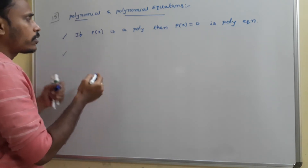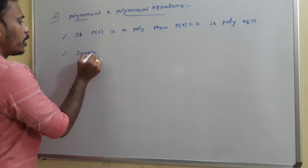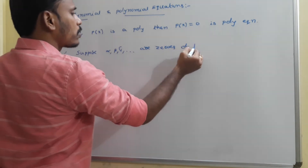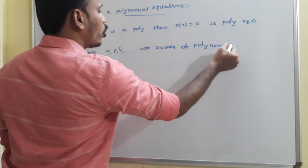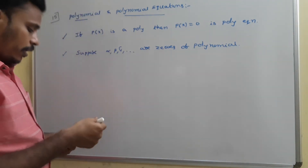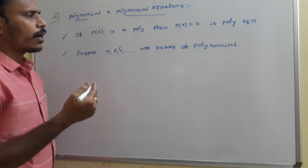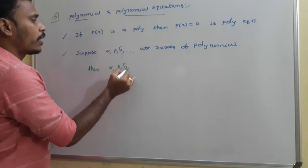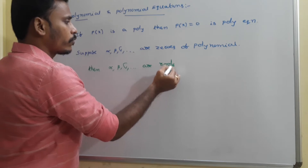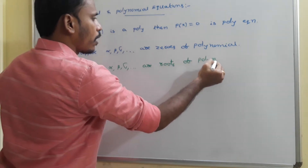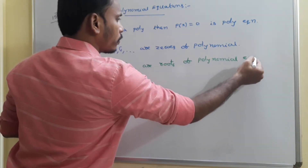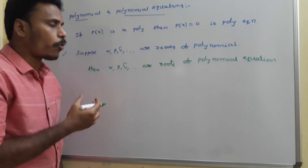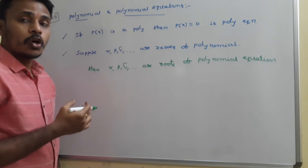Now, the zeros of a polynomial: suppose alpha, beta, gamma are zeros of a polynomial. Then those zeros of the polynomial are considered as roots of the polynomial equation. So if alpha, beta, gamma are zeros of the polynomial, then alpha, beta, gamma are roots of the polynomial equation. All these things are very obvious actually.